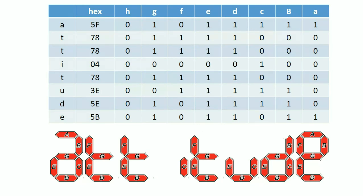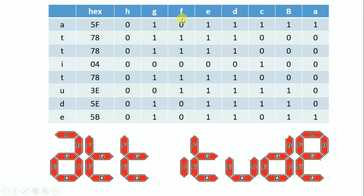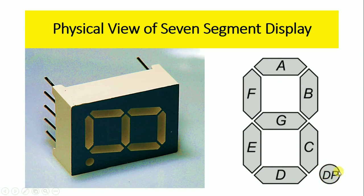Here are the hexadecimal numbers equivalent to displaying the word ATTITUDE. For character A, segments A, B, C, D, E, G are turned on and F and H are turned off, giving the hex value 5F — that is 0101 1111. The dot point segment H is not used in this program and will always be off.